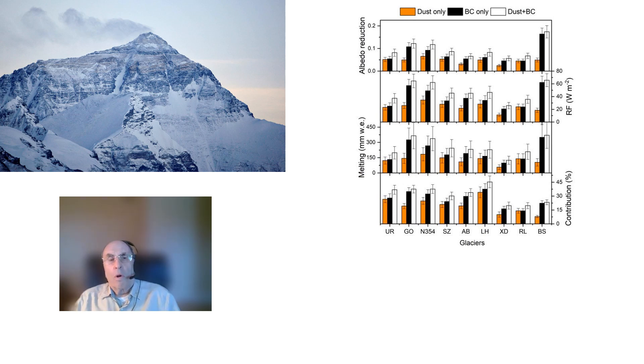The top row in the chart on the right shows the observed reduction in albedo or reflectivity from each of these 10 glaciers. The next row down shows the actual heating of these glaciers by the presence of both dust and black carbon. The third row down gives estimates of the amount of water melt that is due to dust and black carbon.